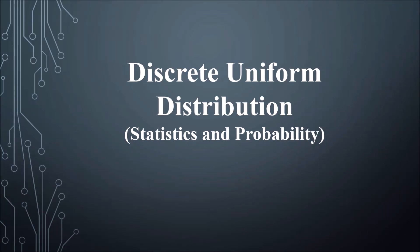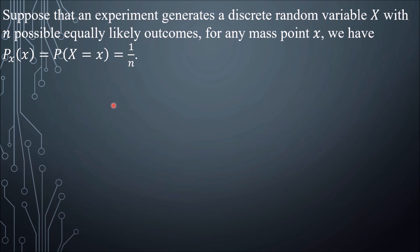Discrete Uniform Distribution. Suppose that an experiment generates a discrete random variable X with n possible equally likely outcomes. For any mass point x, we have P_X(x) = P(X = x) = 1/n.